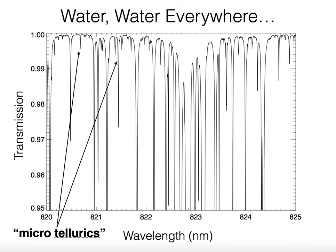If you were to zoom in, you would see so-called microtellurics—that is, lines that have depths of half a percent or quarter percent—they're really everywhere. These lines are very, very numerous in the optical.